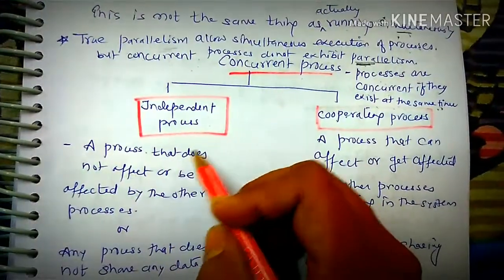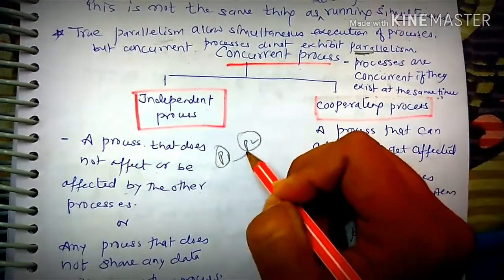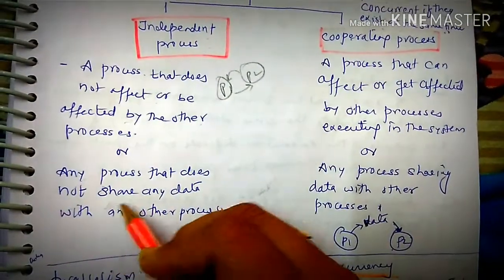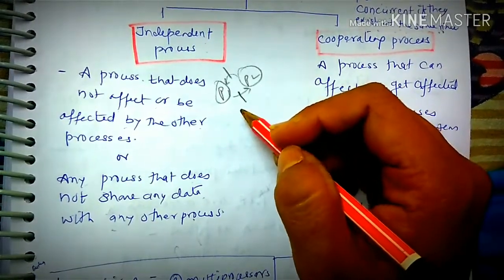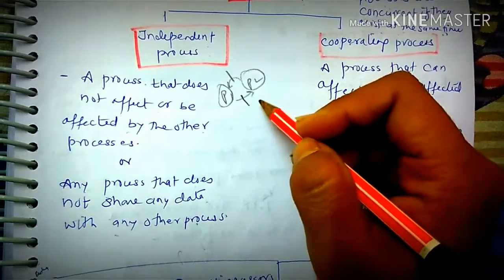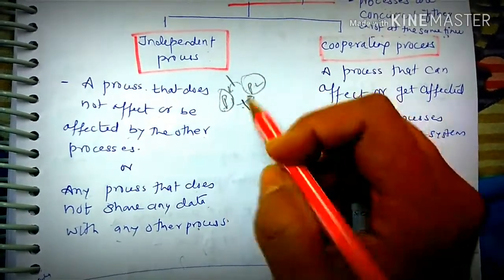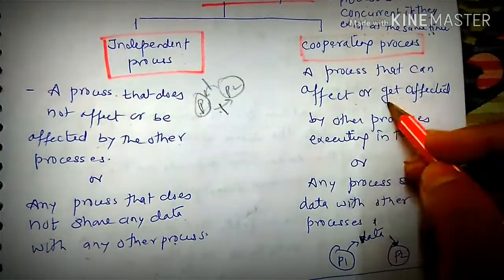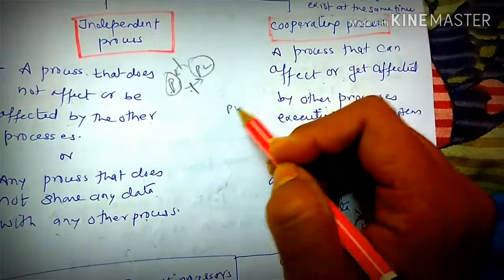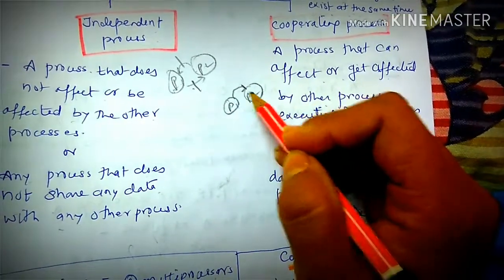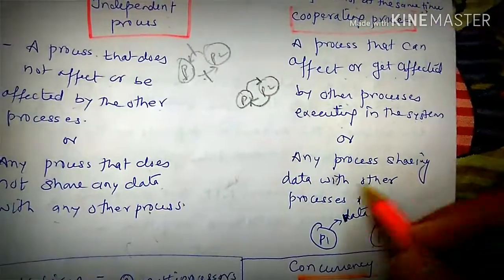There are two types: independent processes and cooperating processes. An independent process is one that does not affect or be affected by any other process — it does not share any data with any other process. A cooperating process is one that can affect or get affected by other processes executing in the system, meaning it shares data with other processes.